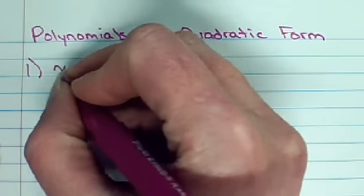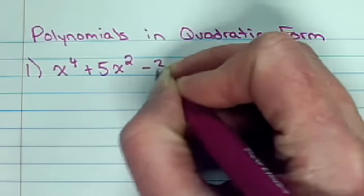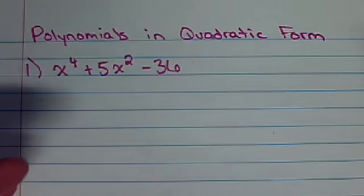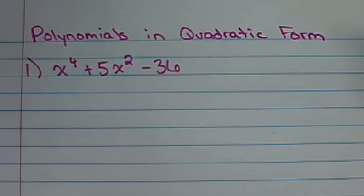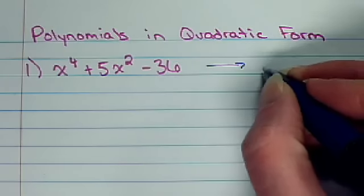If I have x to the fourth plus 5x squared minus 36. Well, it's a trinomial, very similar to some quadratics we've dealt with. Actually, a very similar quadratic would be something like this.